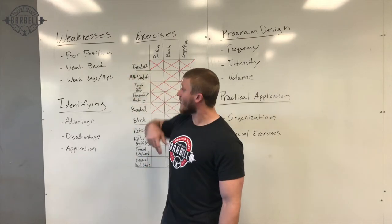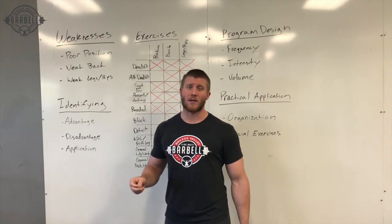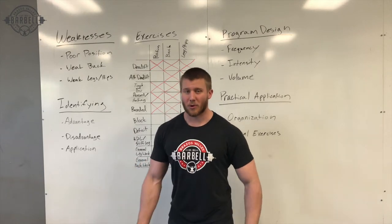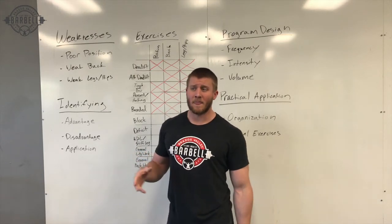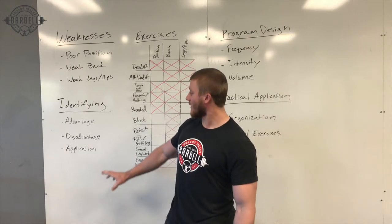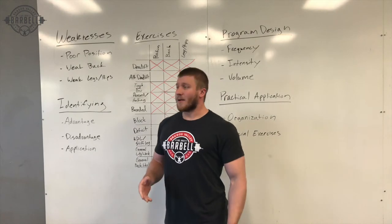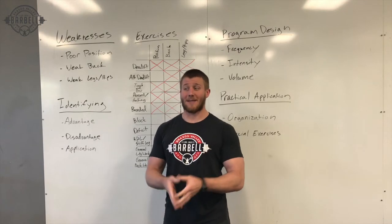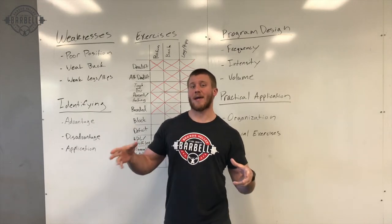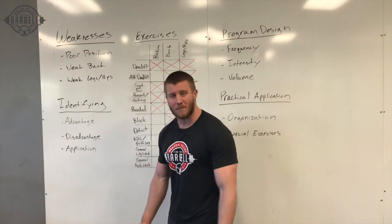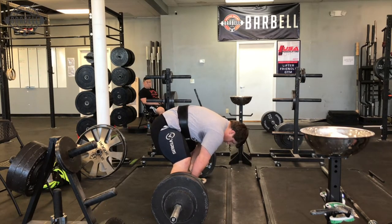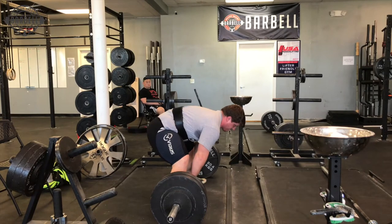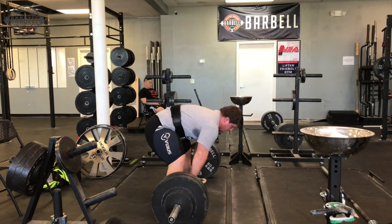With a weak back, some of the things that happen are a weak lockout, the lifter misses around the knees, or the back is progressively rounding as the lifter is pulling. I use the term 'progressively' because there may be some leeway — when we're talking about making the lifter lift the most weight efficiently, we may actually use a slightly more rounded back to do less work. It may look like a weak back, but really they're doing a great job of stabilizing in that slightly rounded position and their back is actually very strong.